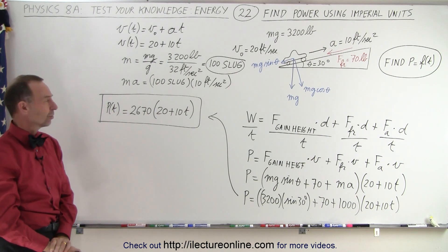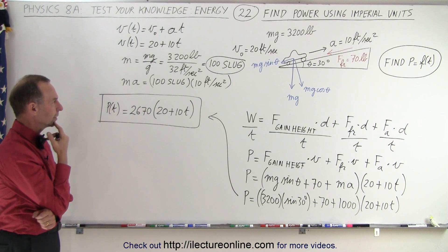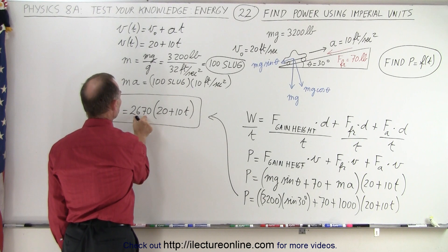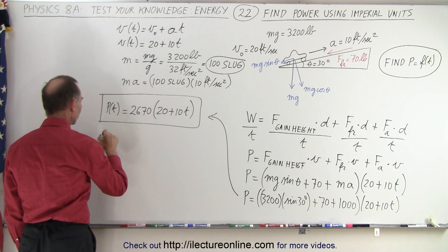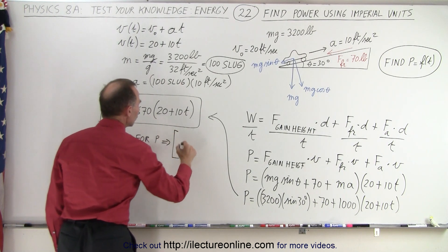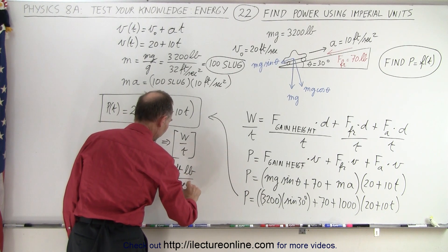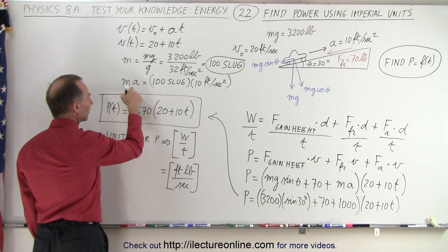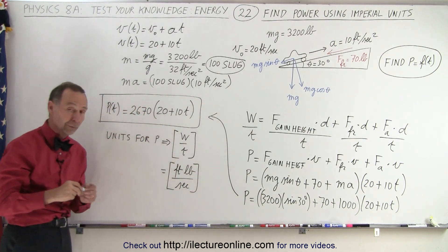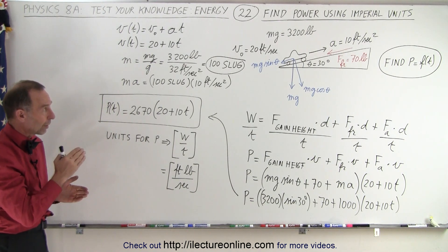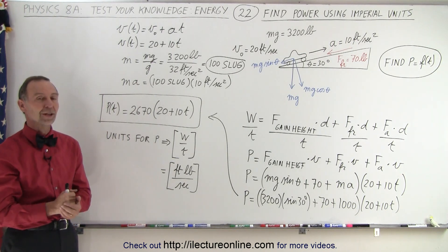What are the units? Power equals work over time, and work is in foot-pounds, so power is in foot-pounds per second. m·a is a force in pounds, and multiplying by velocity (feet per second) gives pounds times feet per second — so the units are indeed correct. This is how we find the power required to drive a car up a hill, accounting for acceleration, gaining height, and overcoming friction, at least in imperial units.